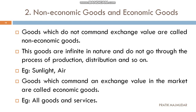Second type is non-economic goods and economic goods. Goods which do not command any exchange value are called non-economic goods. For example, when you use sunlight or air, which is given by nature and is infinite — you are not going to pay any amount for that — then it will be termed as non-economic goods.